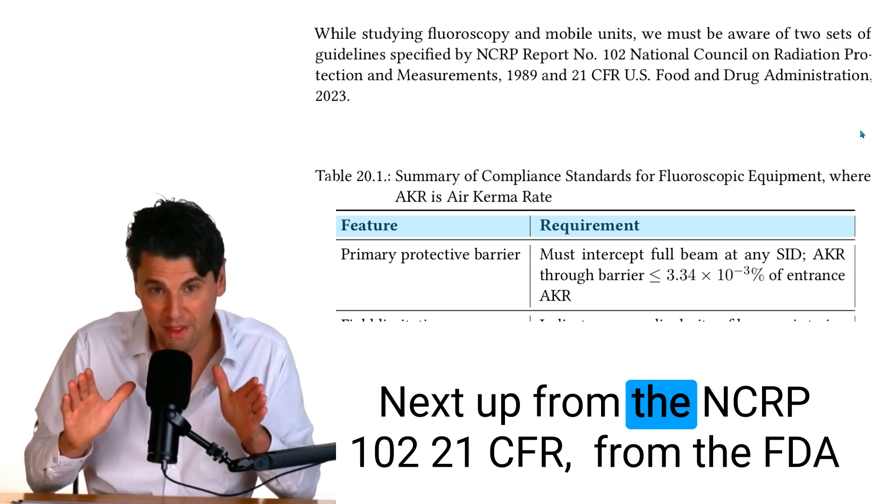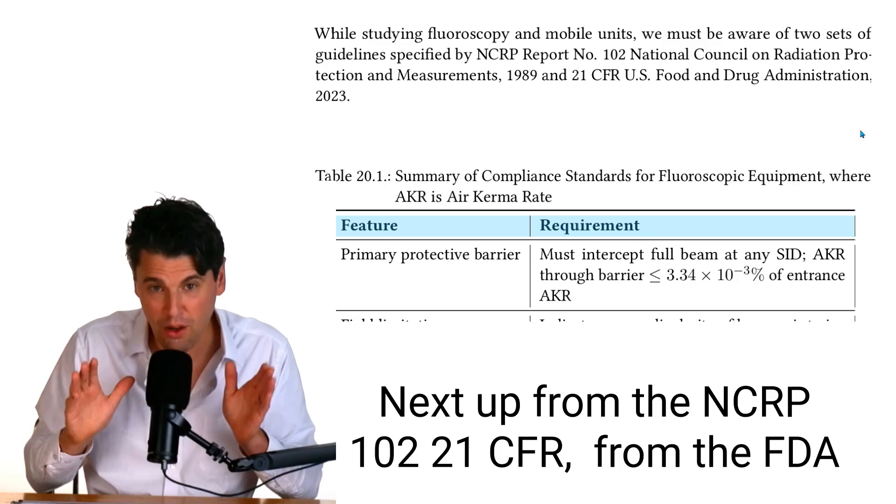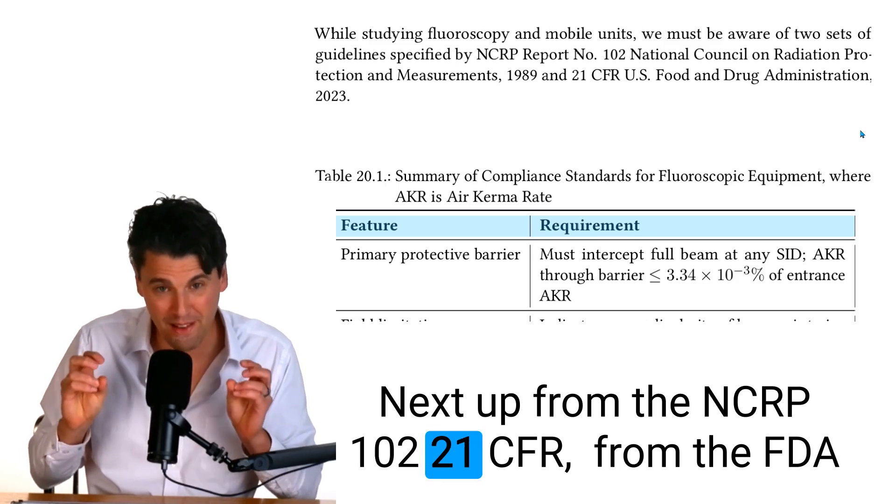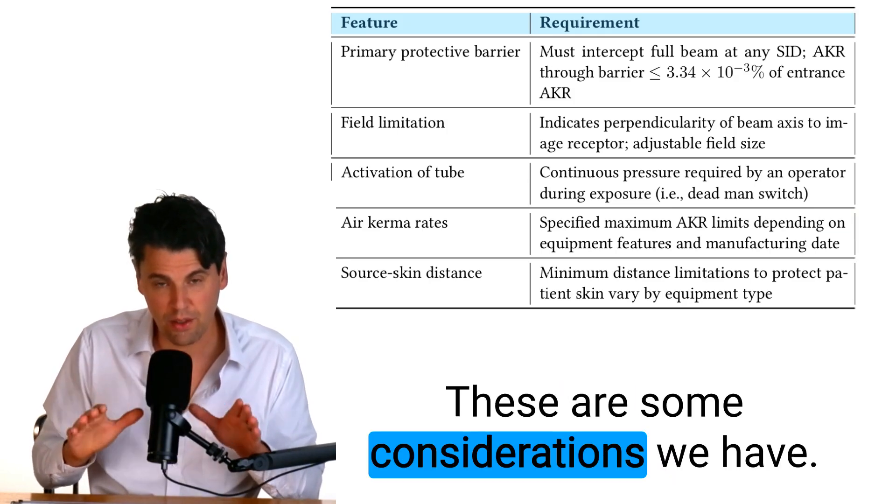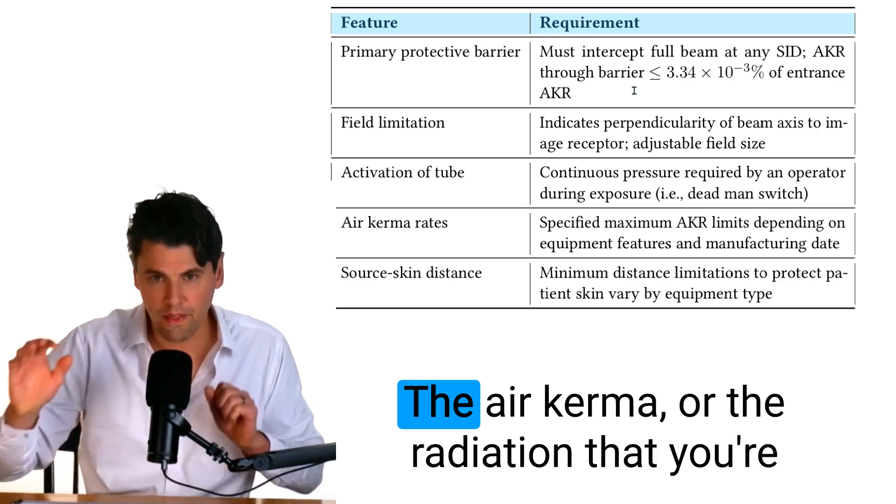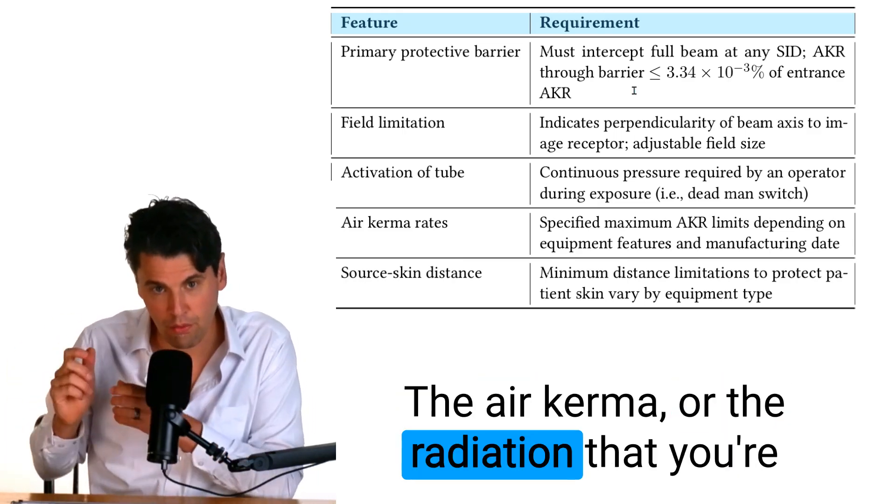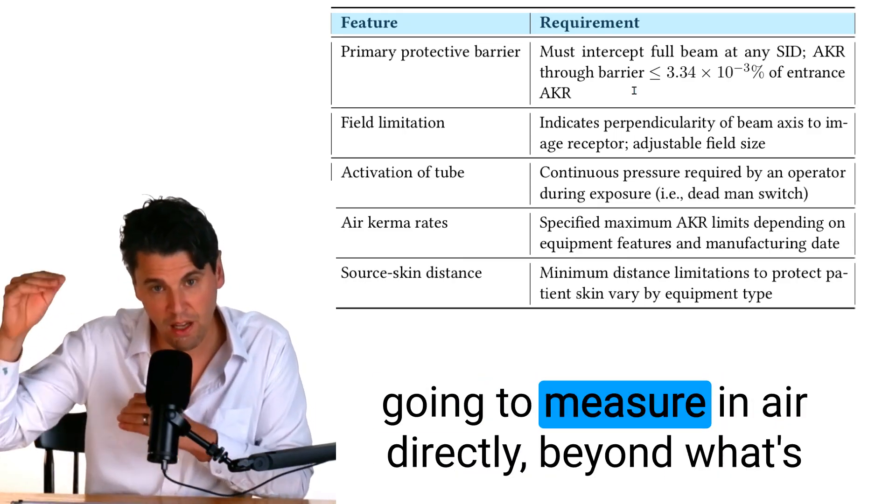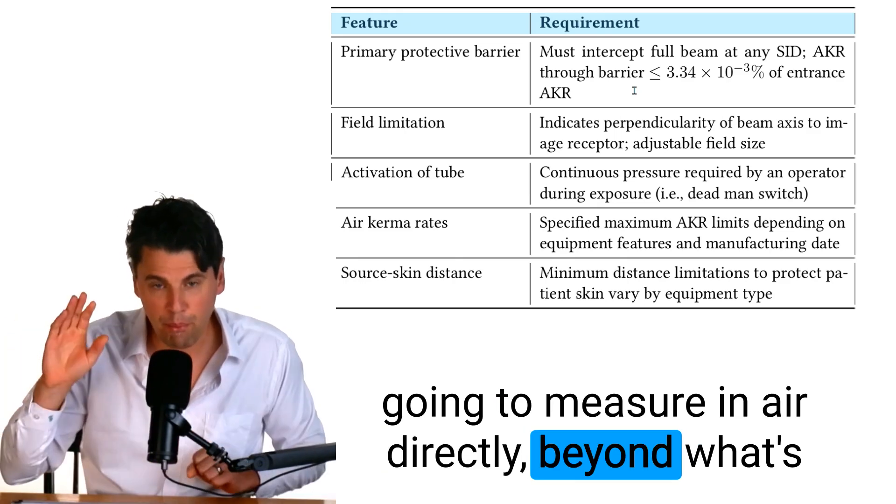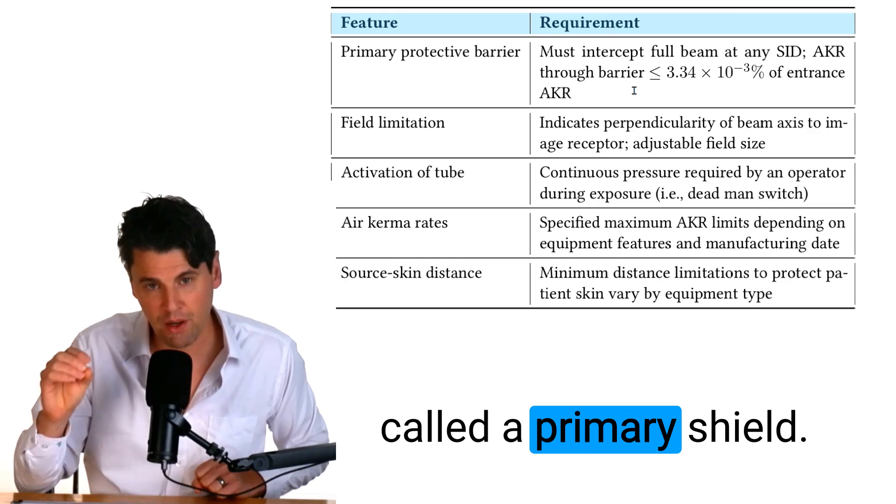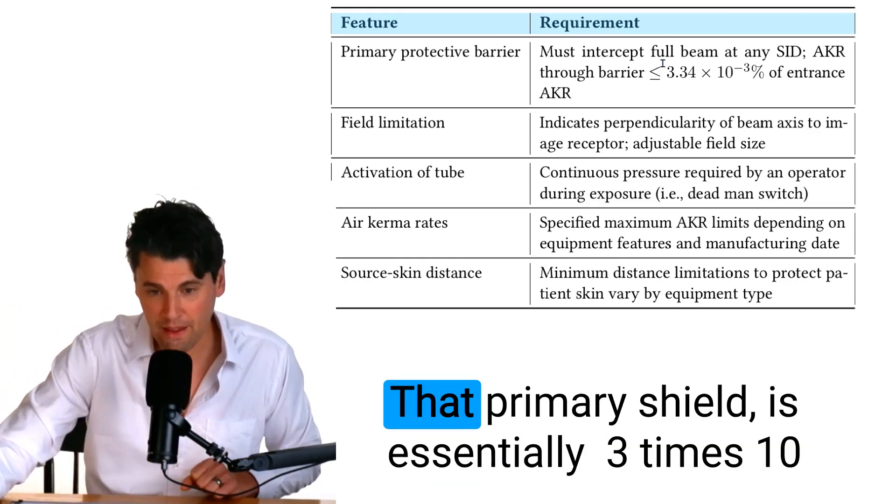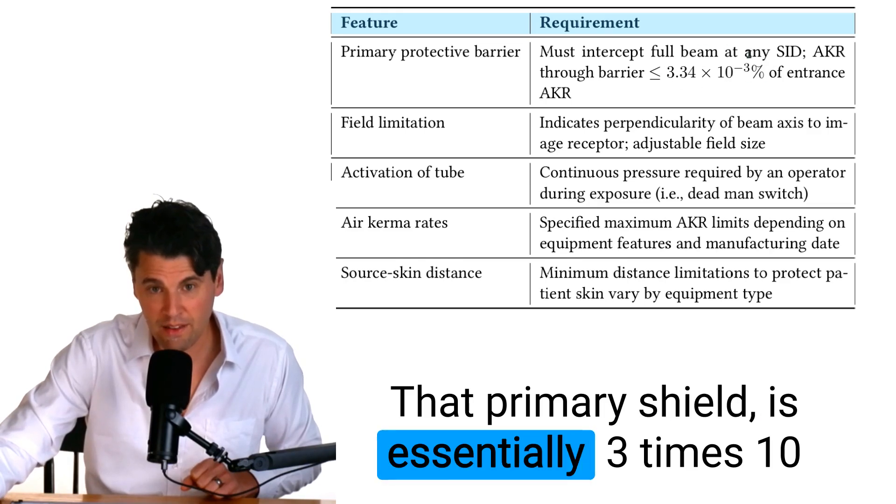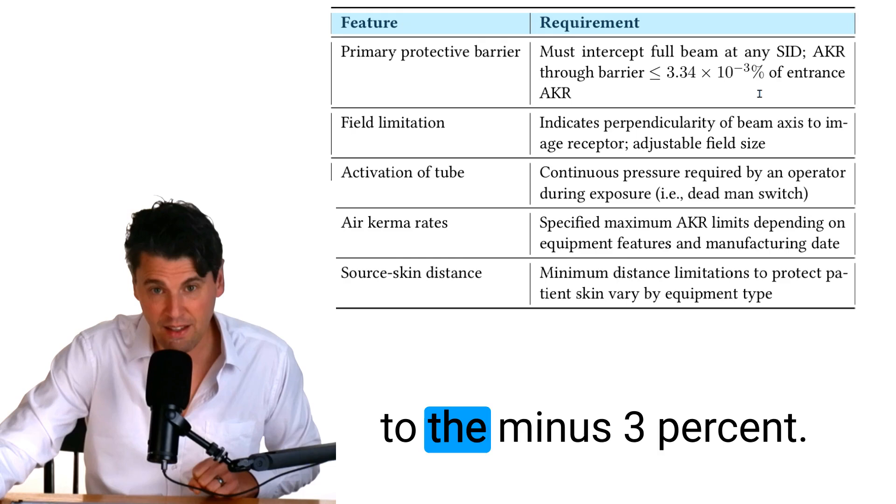Next up from the NCRP 102, 21 CFR from the FDA for fluoroscopy and mobile units, these are some considerations we have. The air kerma or the radiation that you're going to measure in the air directly beyond what's called a primary shield, this means a leaded wall for instance, that primary shield is essentially 3×10^-3 percent.